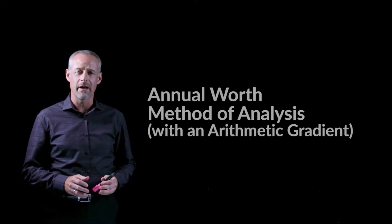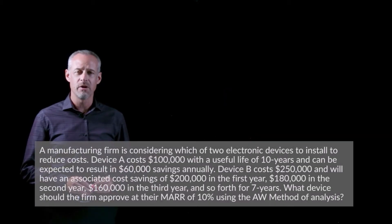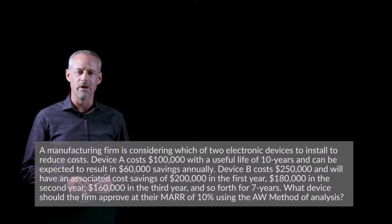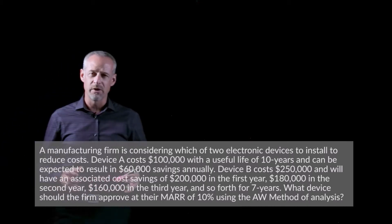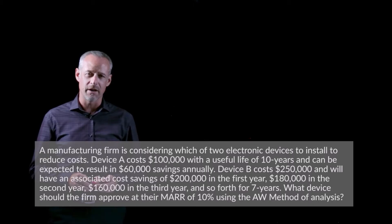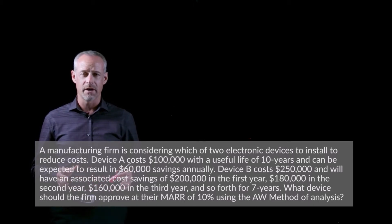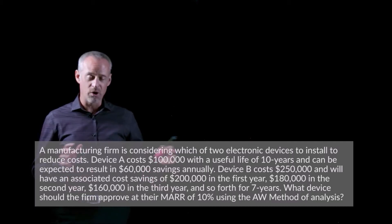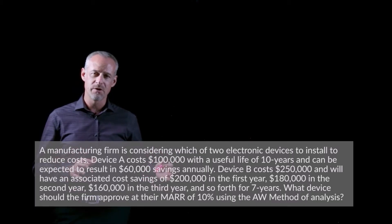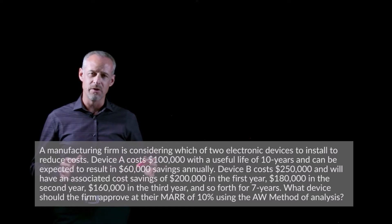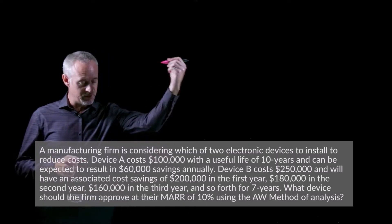In this problem we will do an example using something called the annual worth method of analysis. As we see in this problem, it's really about one of these engineering economics type decisions. The company has to decide which device — device A or device B — to purchase, and how do we make that choice using engineering economic analysis. Let's get right into some of the details.